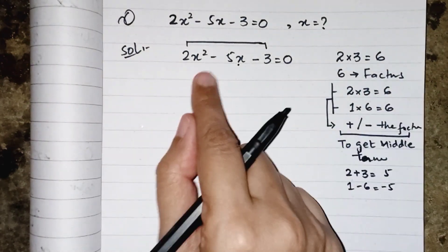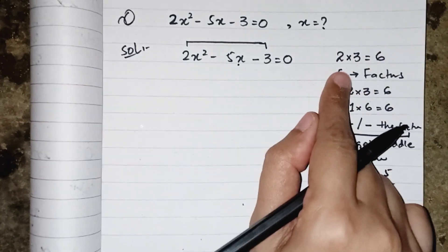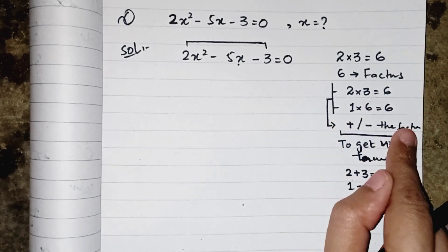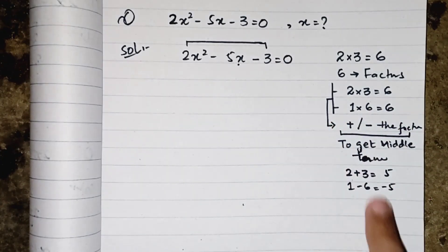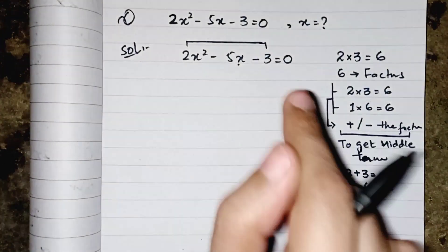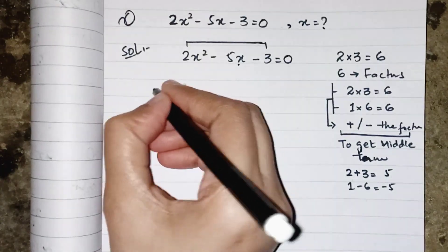So we can see that whatever we have the coefficient of first and last term, we have to multiply them, then we have to find the factors, and when we find the factors we have to add or subtract them to get the middle term.